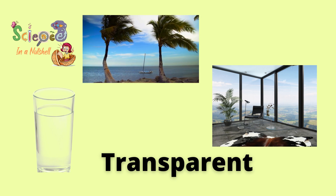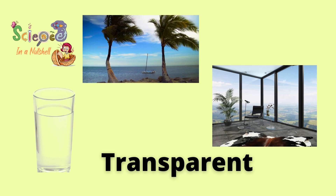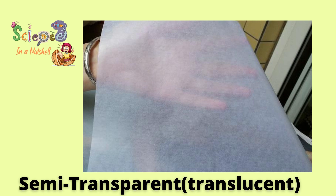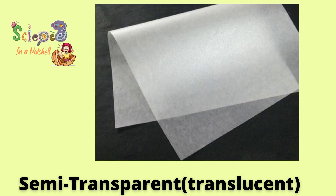These are all transparent, and that's why they allow most of the light to pass through. Then, we have the semi-transparent, or translucent, material. It is the material which lets just some light pass through — not most of the light, not all of the light, just some. Objects can be seen through it, but less clearly. An example of this is tissue paper.